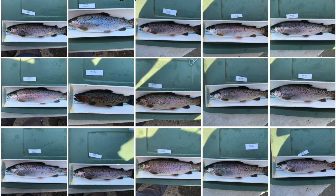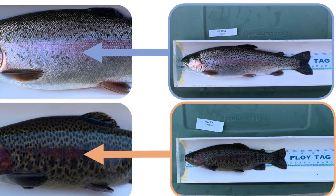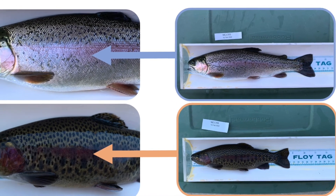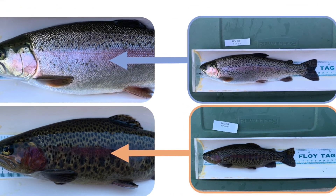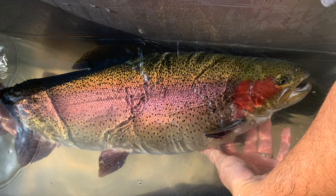Can anyone find the rainbow trout in this group of Oncorhynchus mykiss? If you guessed this guy, you are correct! It's pretty wild how different they can look. Rainbow trout have multitudes of colors, spots, and dots, while steelhead are very silvery. These differences in appearance come from their abilities to survive in different habitats.